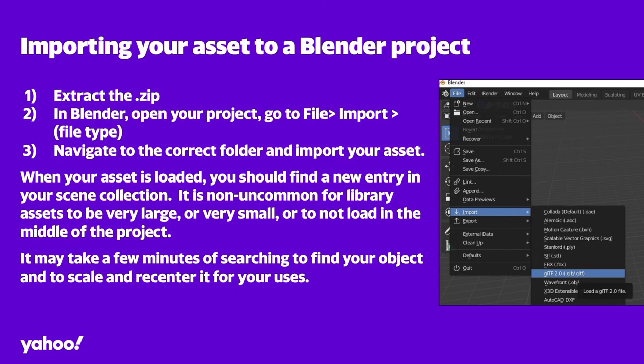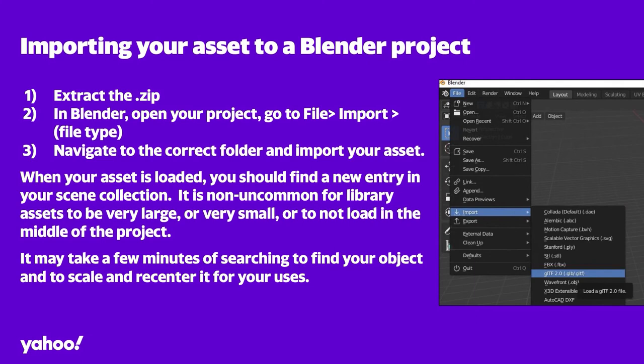To import into Blender, go to File > Import > GLTF. Inside your extracted ZIP folder, you'll find a file called 'scene.gltf' that you can import into your project — it should appear dead center in your scene. If it doesn't load immediately, check the scene collection (covered in the next video) and look for an object called 'root node.' It's very possible the imported object is very small or very large, so the next video will cover how to zoom in and out to find it, and how to rescale and recenter it.